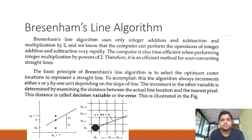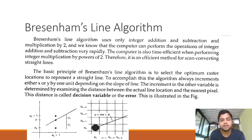Bresenham's line algorithm uses only integer addition, subtraction, and multiplication by two. It doesn't involve any division operation and also doesn't require rounding. In DDA, since we were dividing, we had to round off values by writing a global round-off function — that is also not required here. We also know that computers can perform integer addition and subtraction very rapidly, which gives this algorithm its speed.